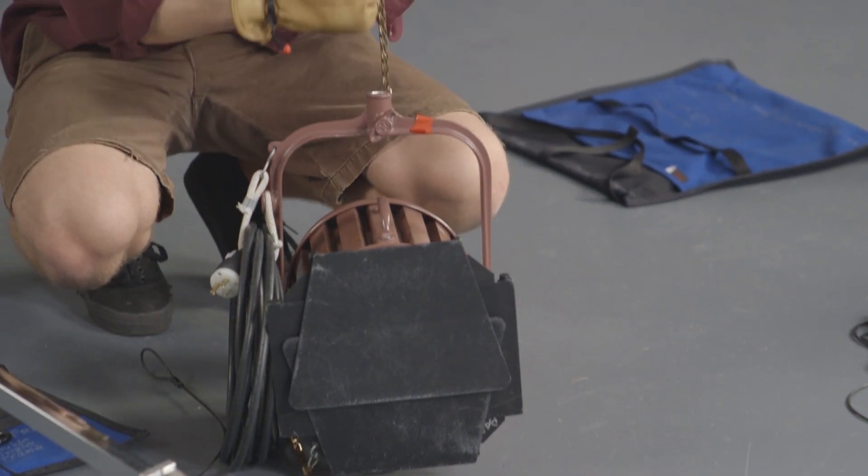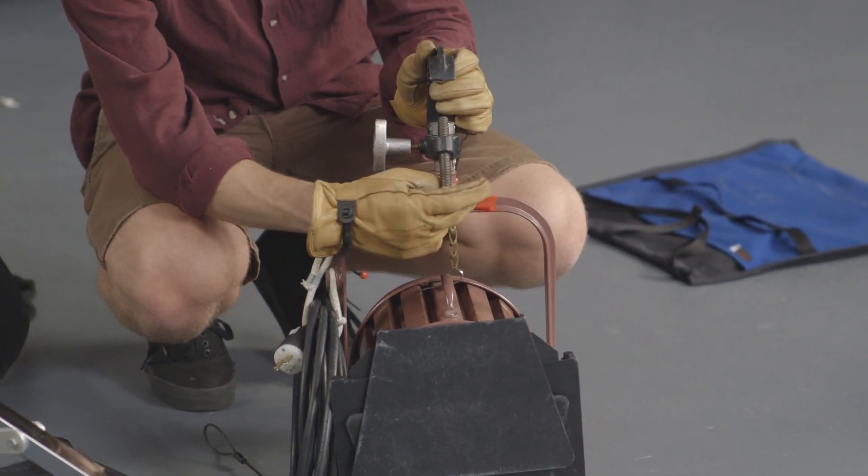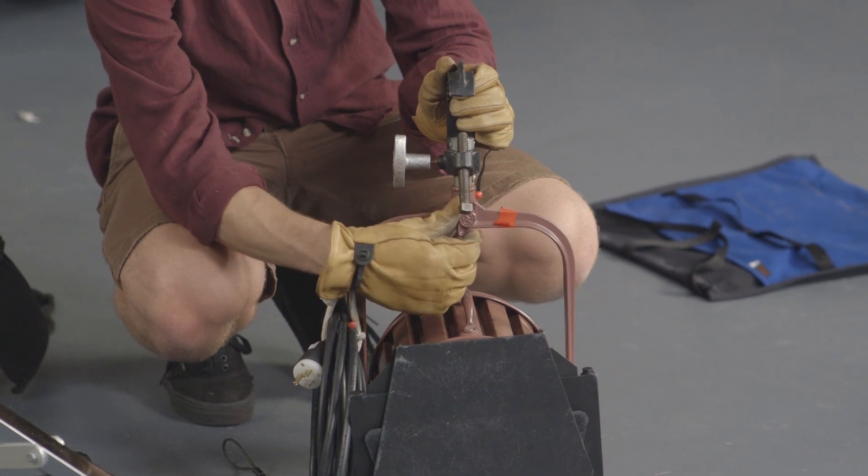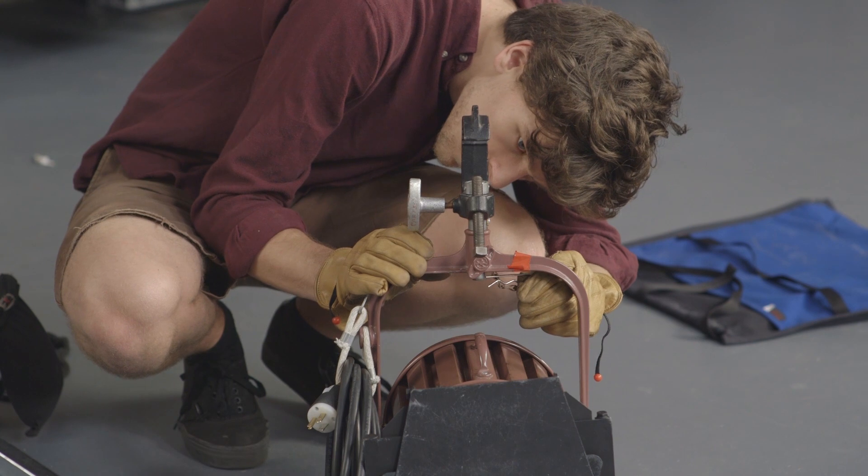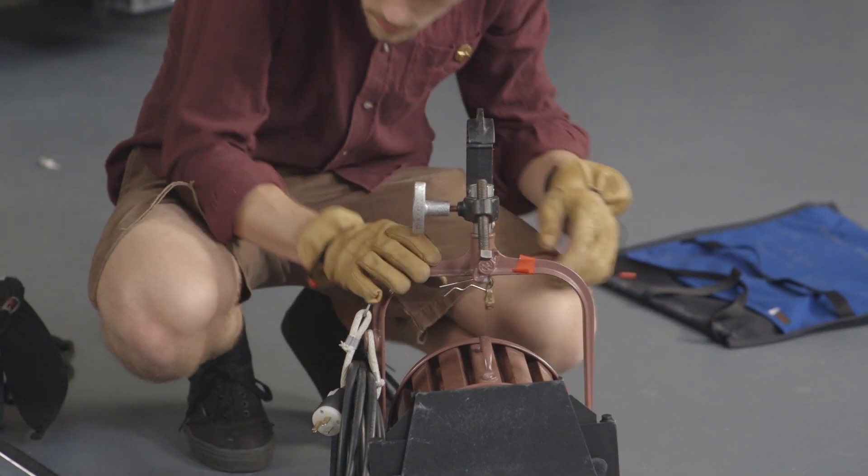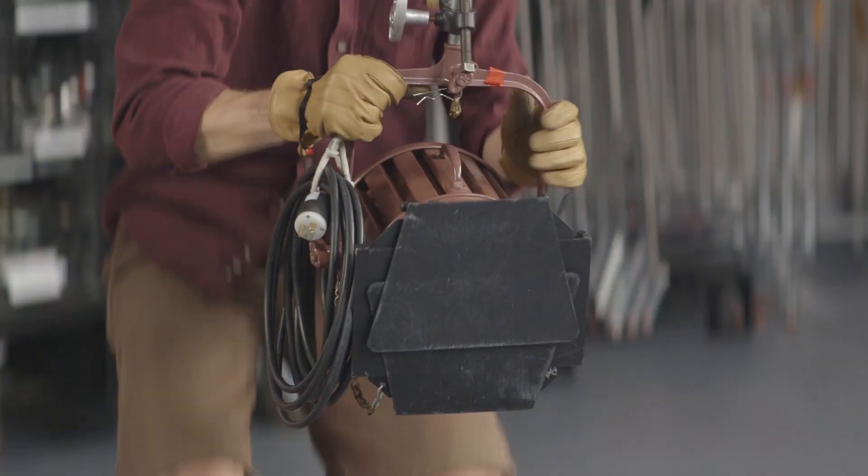To hang the light onto pipe, put the light into the clamp while on the ground. Add a cotter pin. Hang the light.